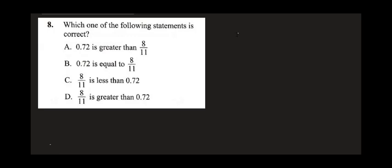Question 8 says: which one of the following statements is correct? It's comparing the numbers 0.72 and 8 over 11. The best thing to do here is to do a long division of 8 over 11. 11 into 8 cannot go, so you put 0 and add your decimal point, then add a zero.